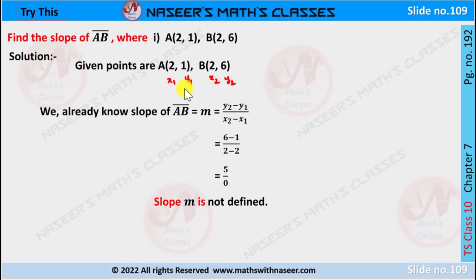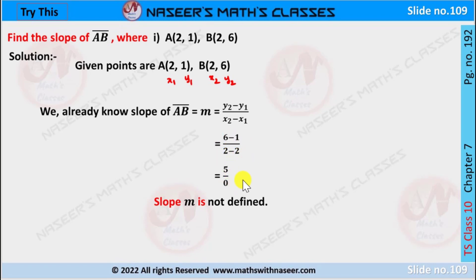Given points are A(2,1), so x1 is 2 and y1 is 1, and B(2,6), so x2 is 2 and y2 is 6. We know the slope m equals (y2 minus y1) by (x2 minus x1). Substituting: 6 minus 1 by 2 minus 2, which gives 5 by 0. Since division by 0 is not possible, 5 by 0 is not defined. Therefore slope m is not defined.